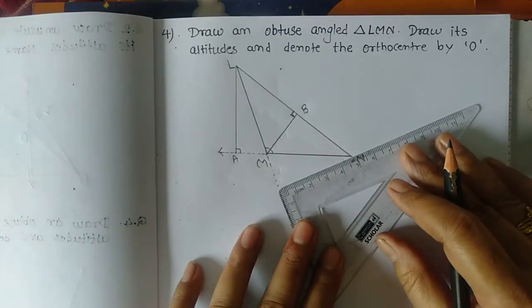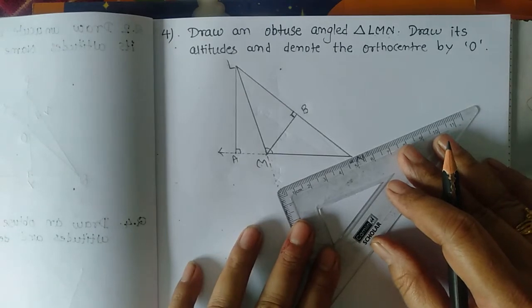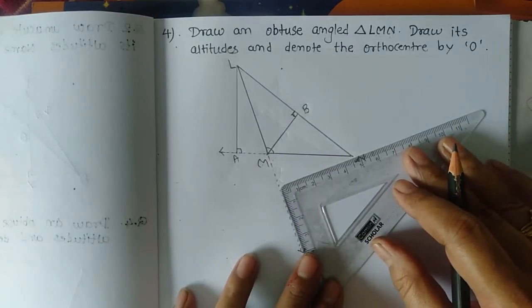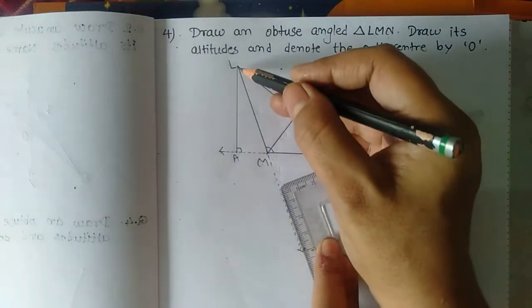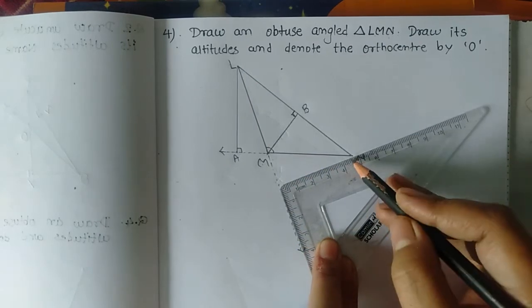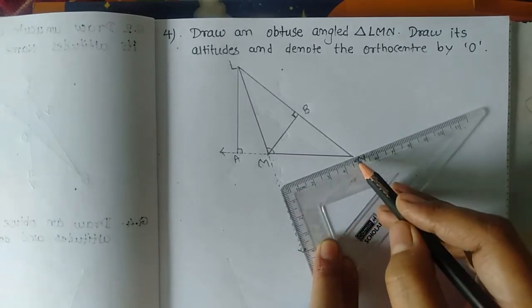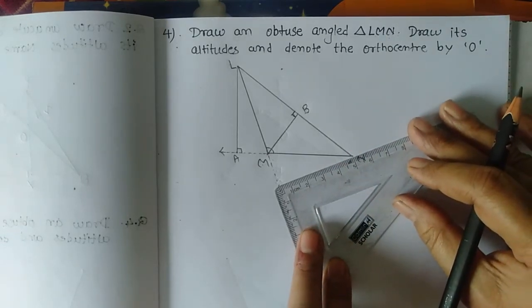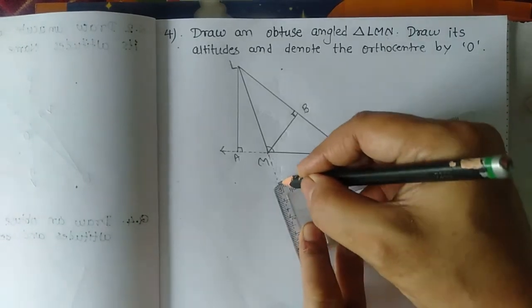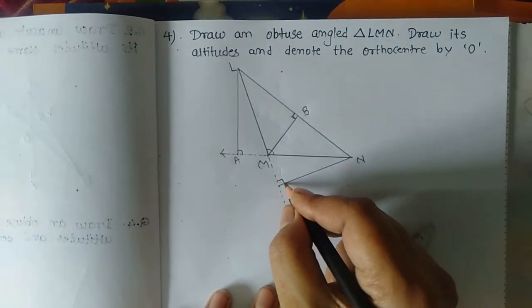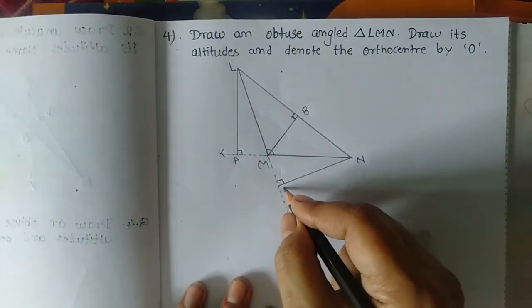The altitude from N: one side of the set square is on side LM and another side intersects the opposite vertex N. Now draw the altitude. Label this point C.